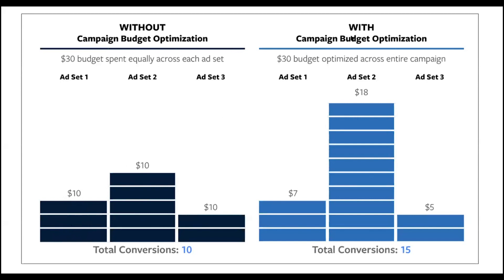When we go to CBO, we have actually given the budget to the campaign level. Previously we had to give the budget to the ad set, and now we give it at the campaign level. How do you give the budget to the campaign level on Facebook? What do you do to get the best results on the audience and the ad?